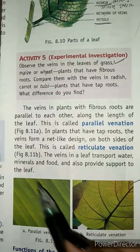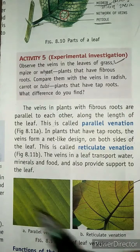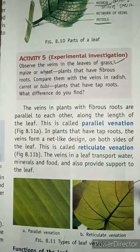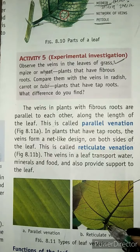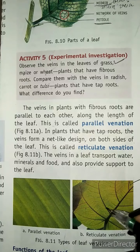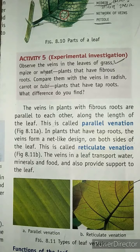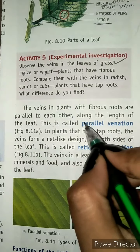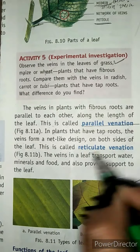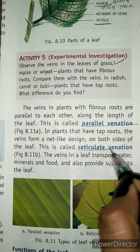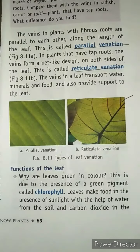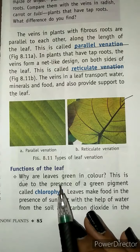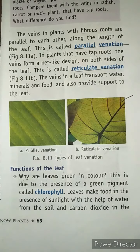In parallel venation all veins are equal in length, while in reticulate venation there is a midrib with small side veins branching off. So these are the two different venations: parallel venation and reticulate venation.